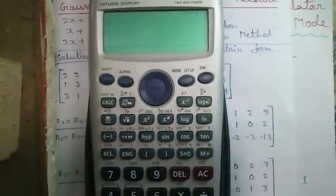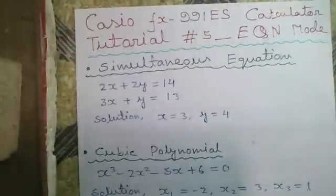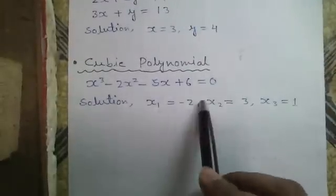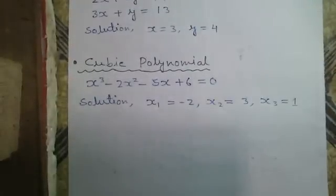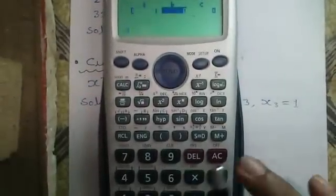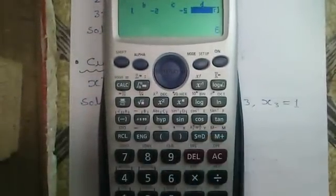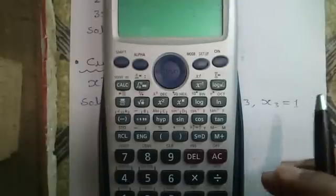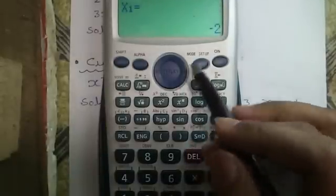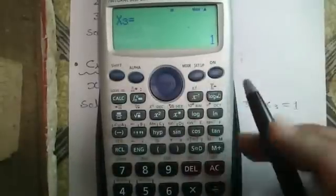And our last mode is mode 4 or cubic polynomial solver. Here is a cubic polynomial. Coefficients are 1, minus 2, minus 5 and 6. Press equals to. So our first root is x1 equals to minus 2, x2 equals to 3 and x3 equals to 1.